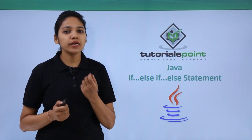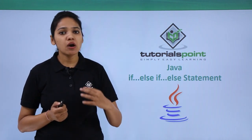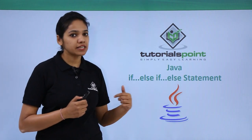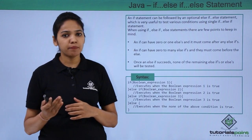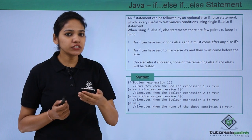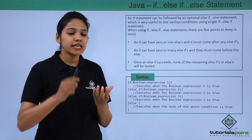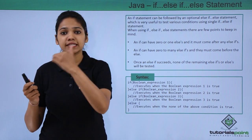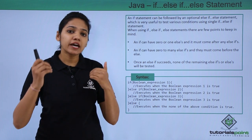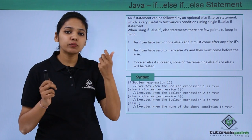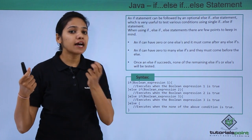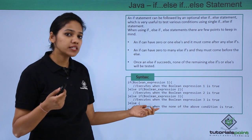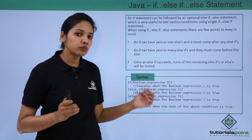By now we know how if statements and if-else work, but let us see how the if-else-if-else statement works. Normally we write: if the condition is true, execute this block of statements; else execute the other block. But we may also provide additional conditions written between if and else using the keyword else-if.